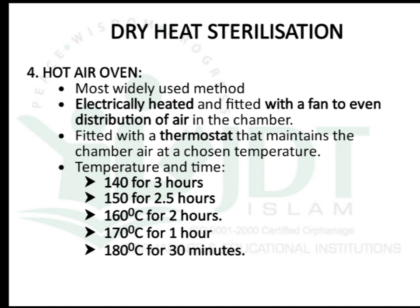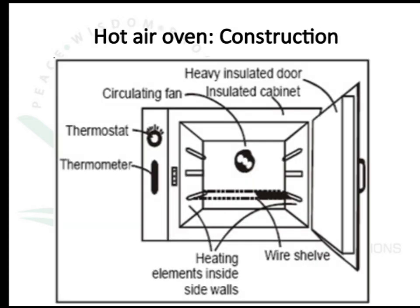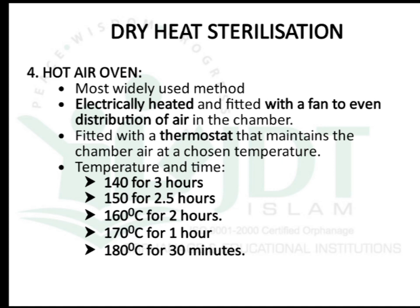The most important and most commonly used dry heat method is the hot air oven. Its construction consists of a heating element inside the sidewall, a thermometer to measure internal temperature, a thermostat to adjust temperature conditions, and a circulating fan to ensure temperature is distributed equally throughout. All of this is enclosed in an insulated cabinet with a heavy insulated door made of stainless steel or other metals.